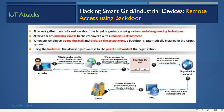Hacking smart grid and industrial devices via backdoor involves the attacker first gathering information about the target using social engineering, then sending phishing emails to employees with malicious attachments. When an employee opens the attachment, a backdoor is automatically installed in the target system, giving the attacker access to the private network.